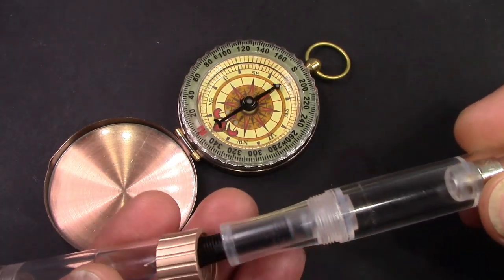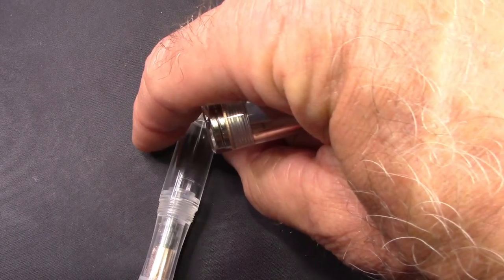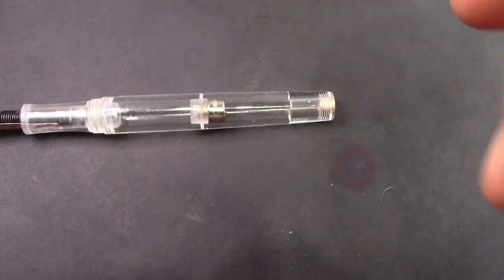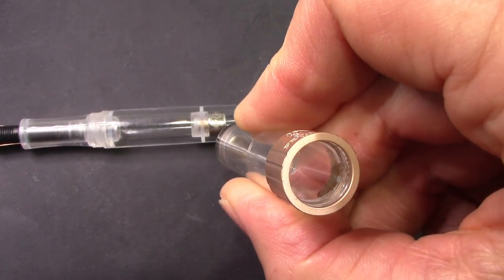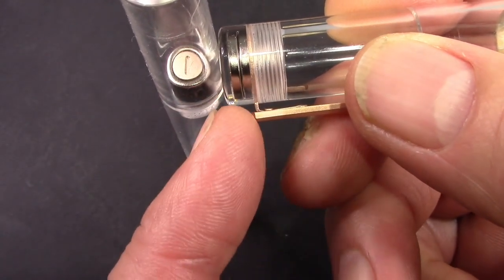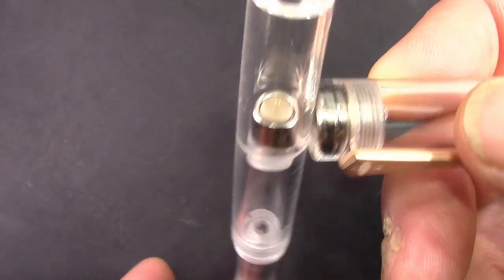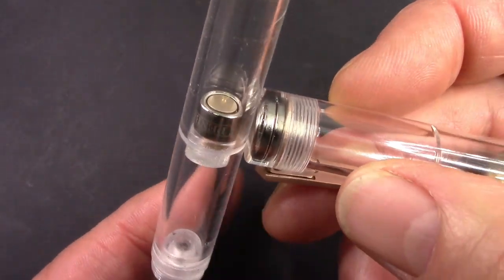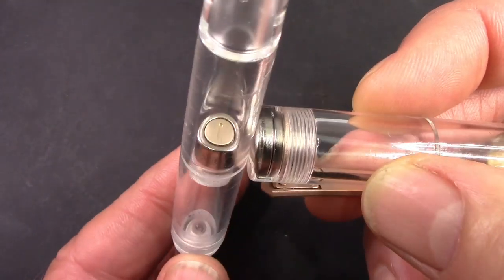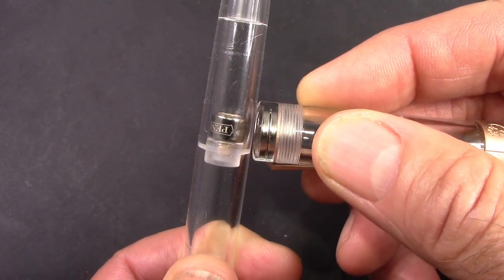So when you use the cap, and we'll just put the barrel down, hopefully in a way that it doesn't roll away. And as the cap approaches the barrel, the barrel will move. And now that south pole is facing in that direction, attracted to the north pole of the magnet inside the top of the cap. And it does take a little bit of effort to separate them.